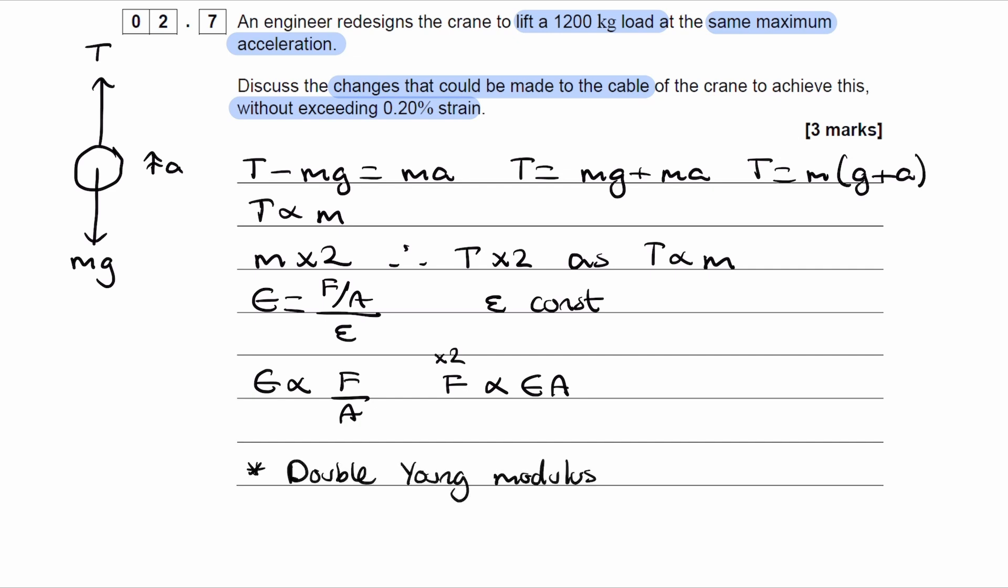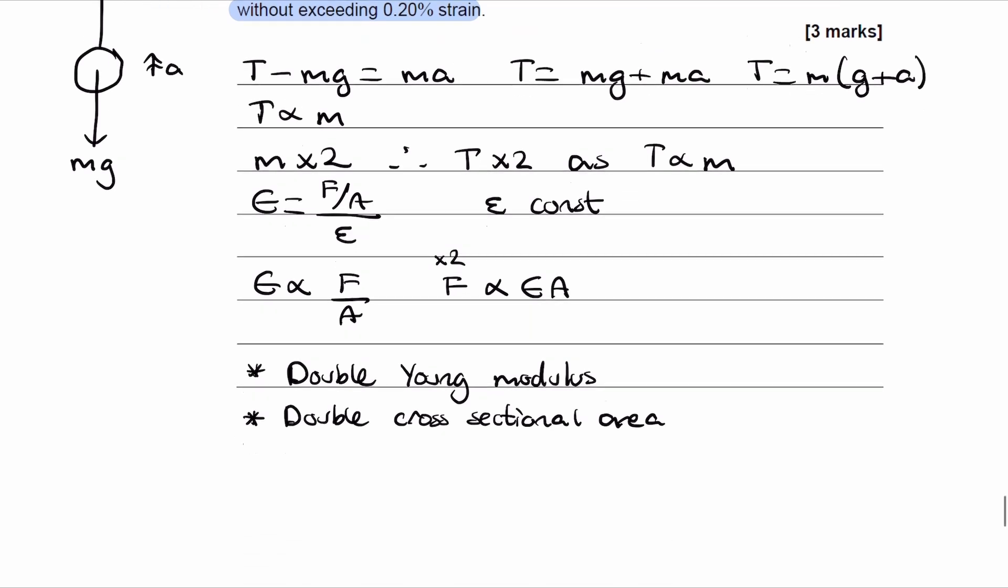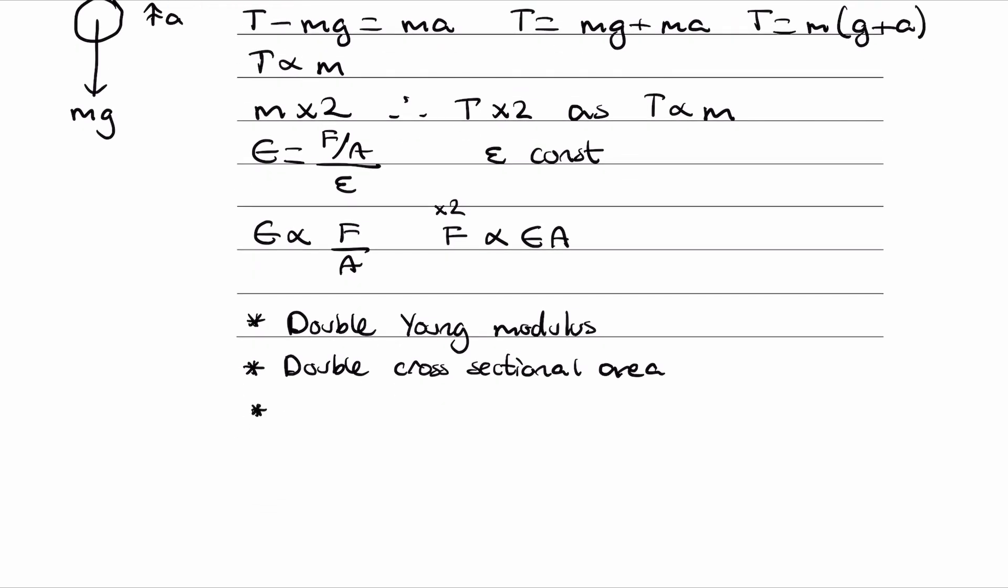So double Young modulus, double cross-sectional area, or double the product of the Young modulus and cross-sectional area.